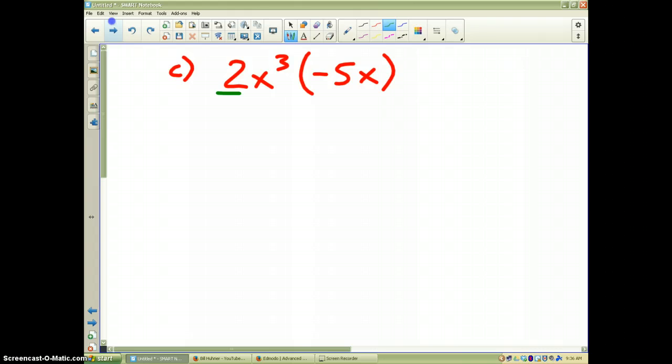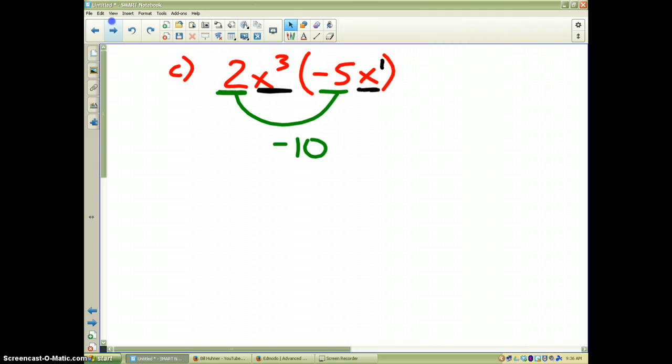Alright, if you did this correctly, notice the 2 and the negative 5, those are not powers, they are coefficients. So those two should be multiplied together to give you negative 10. What I'm underlining in black, x to the third, and this would be x to the first power, those are two things multiplied together. We're going to add the powers, and you should get x to the fourth. That should be your simplification of this particular problem.